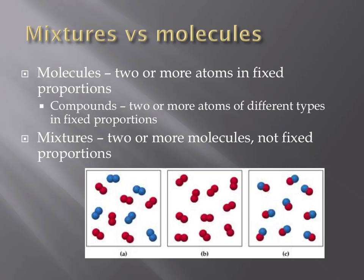Boxes B and C contain molecules of the same type, and there are fixed proportions of the atoms — they are pure substances. In B, there are always two red spheres connected together. In C, there is always one red sphere connected to one blue sphere, and this can't be changed. Box C contains a compound, because there are two different types of atoms in fixed proportions.